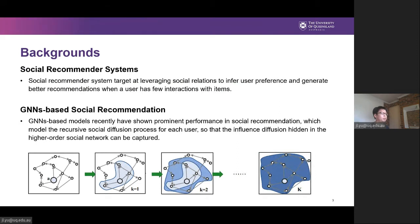The basic paradigm of social recommendation is that given social relations, social recommender systems target at leveraging them to infer user preference and generate better recommendations when there is few user-item interaction data. Over the past decade, a lot of social recommendation models have been developed and shown stronger performance compared with traditional recommendation models.